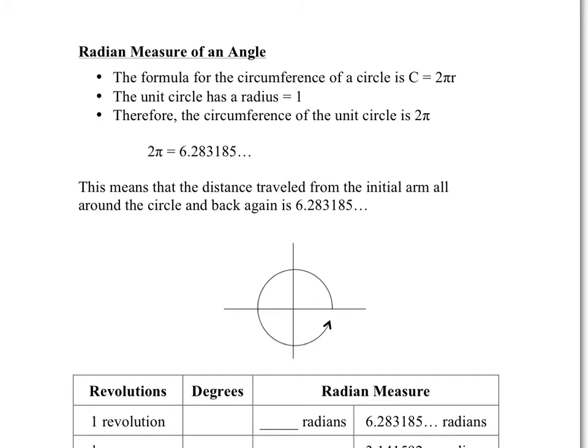The formula for the circumference of a circle is C = 2πr. You learned that way back in probably grade five or six. Well, the unit circle has a radius of one. So if I was to put a one in here, the circumference would be equal to 2π. So if I plug in one, you get 2π. So the circumference of the unit circle is 2π, which is approximately 6.283...